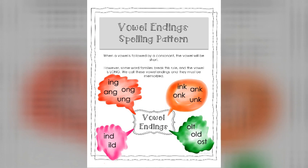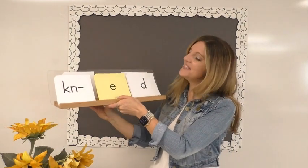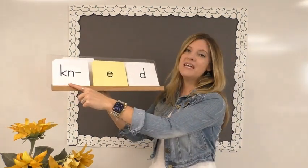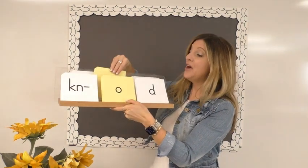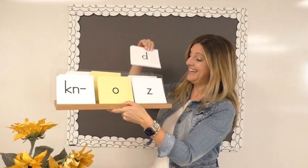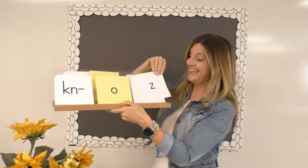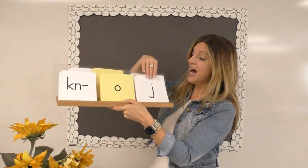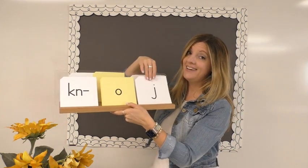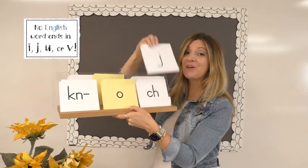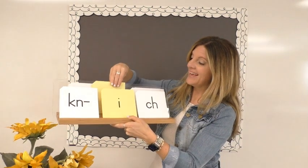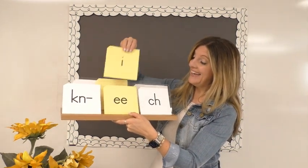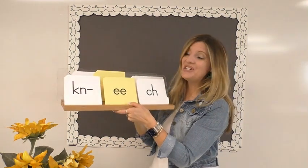Let's play with some of these silent letter digraphs. This would be N-E-D, N-O-D, N-O-Z. Could we ever have a J at the end? No — we know that no English word ends in J. How about this one? Niche.